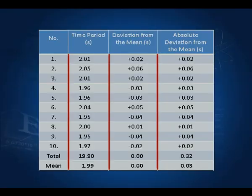Here I have before you 10 observations of the time period of a pendulum whose length is 100 centimeters. The first column is the observation number, the second column is the time period in seconds, the third column is the deviation from the mean, and the fourth column is the absolute deviation — so all numbers in the last column are positive. The mean time period is 1.99 seconds. The sum of all deviations is 0, as expected. The sum of all absolute deviations is 0.32, and the average of these absolute deviations is 0.03. This 0.03 is called the absolute error in the mean of 1.99.